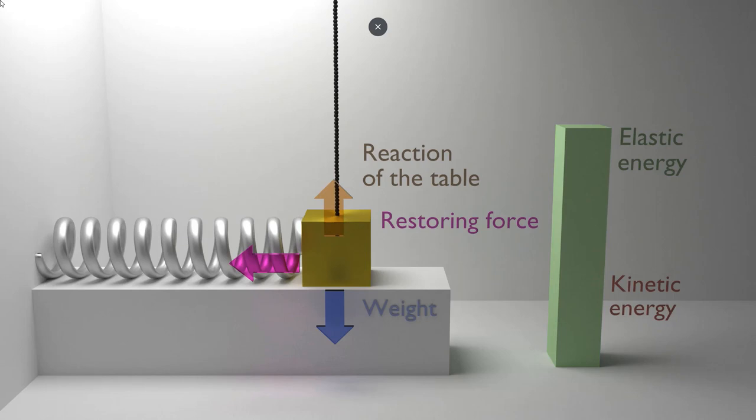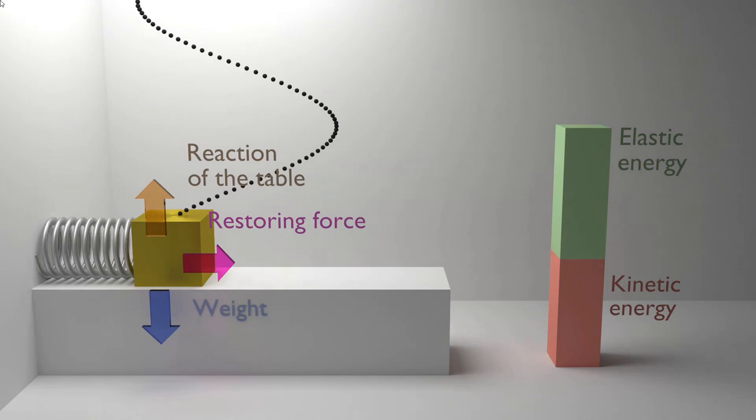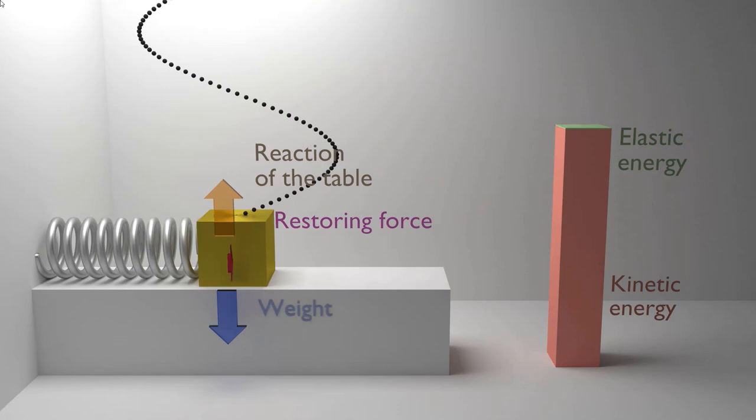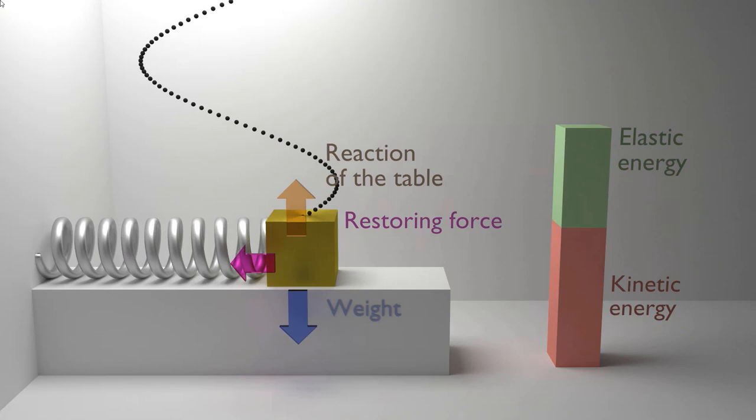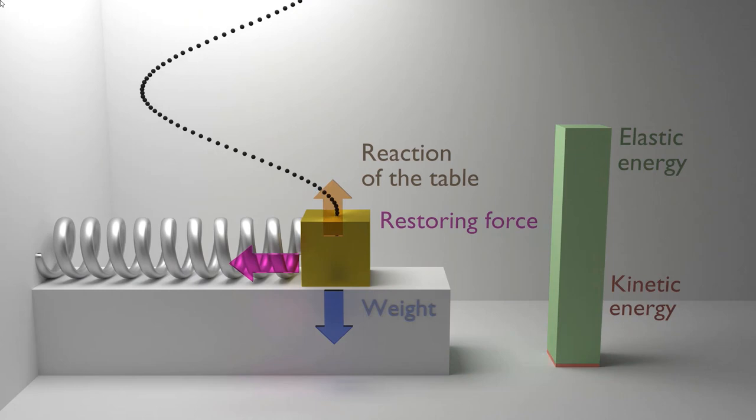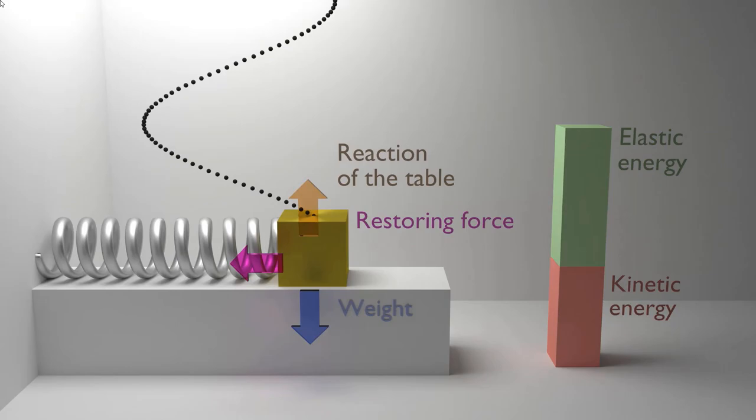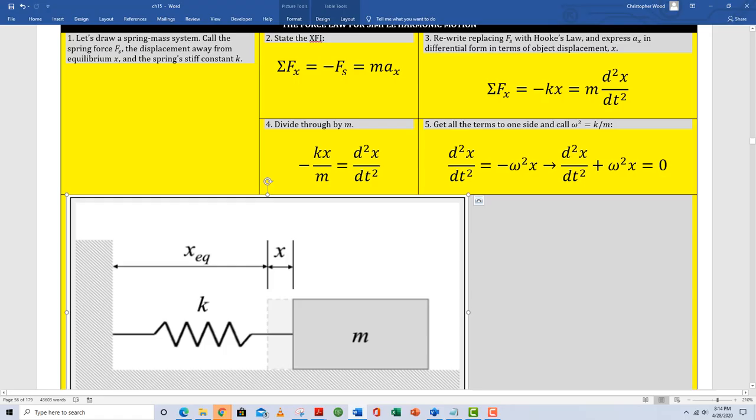This is called a spring-mass system. A mass is attached to a spring and sliding back and forth on a frictionless table, showing how the spring force is a restorative force and illustrating the shift between elastic potential energy and kinetic energy. This is our first real physical simple harmonic oscillator. The restorative force is linearly related to displacement away from equilibrium, and the motion looks sinusoidal.